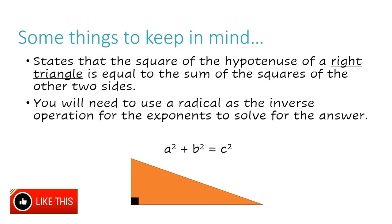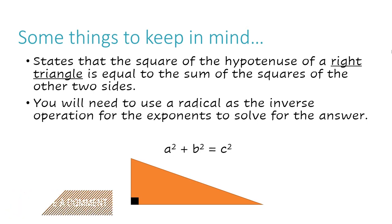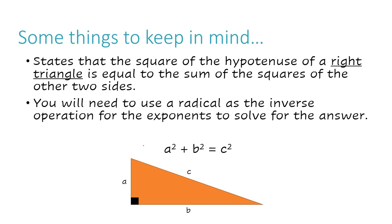In this triangle, I know I'm dealing with a right triangle because there's a square at one corner. That square is where the right angle is, which means that angle is exactly 90 degrees. Sides A and B are the two sides that are next to, or adjacent to, the 90-degree angle. Side C is the hypotenuse — it's diagonally across from where the right angle is.